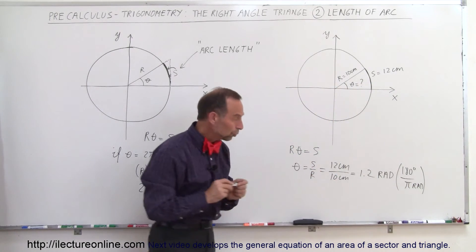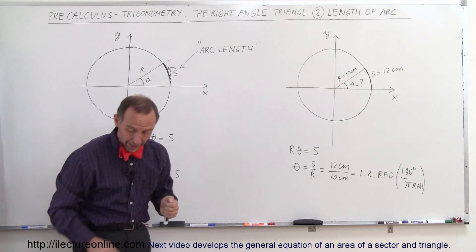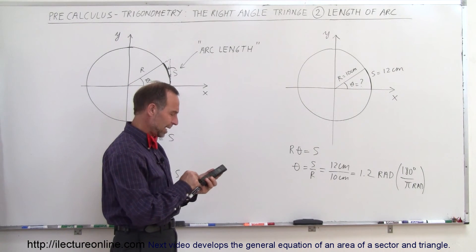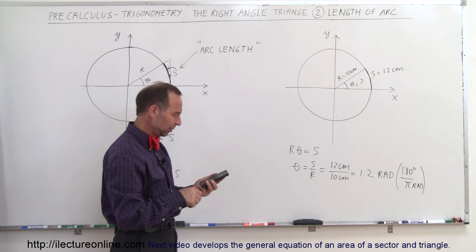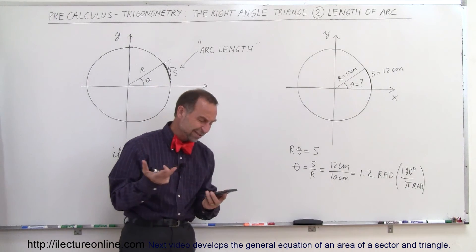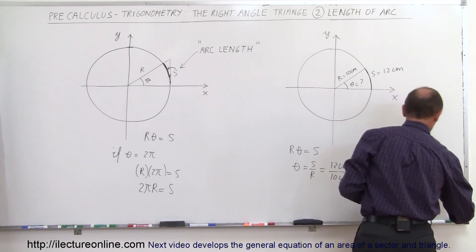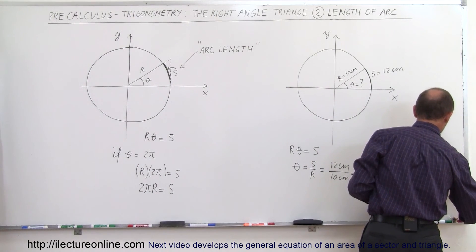And so we multiply 1.2 times 180 divided by π. So 1.2 times 180 divided by π equals—and we get 68.75, make it 68.8. So it equals 68.8 degrees.